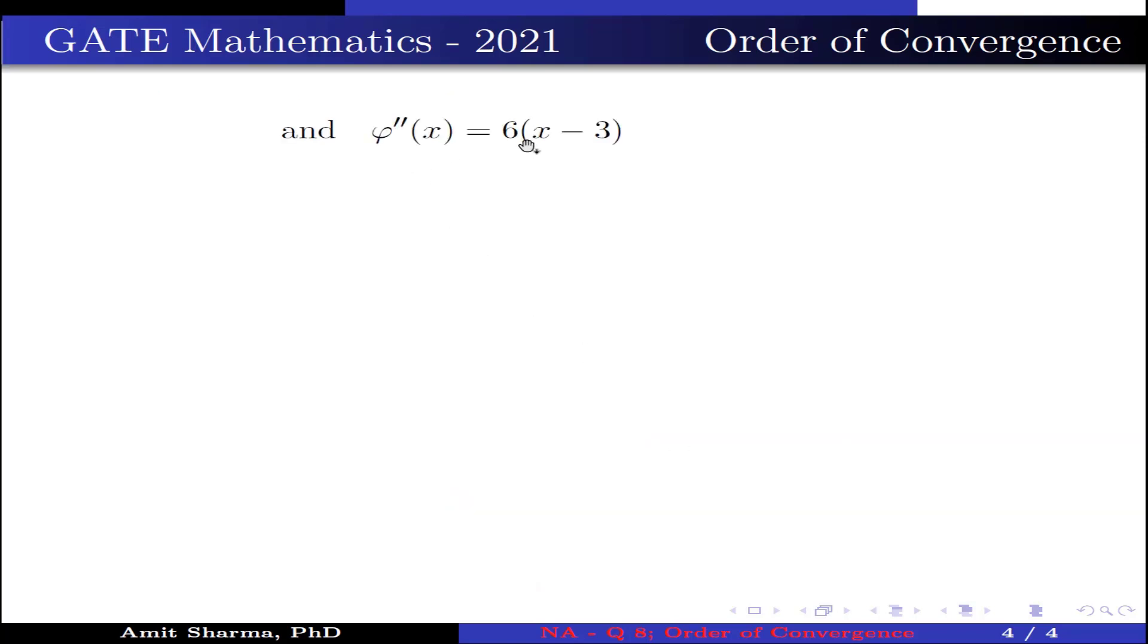And ψ''(x) = 6(x - 3). This implies ψ''(3) = 0.